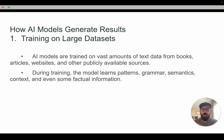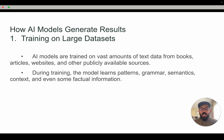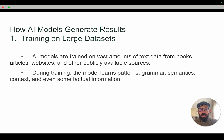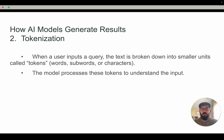So first, training on large data sets. AI models are trained on tons of data from books, articles, websites, and other publicly available sources. We just feed it a bunch of data and then during training the model learns patterns, grammar, semantics, context, and even some factual information. So we give it a bunch of information and then it needs to start to understand it and break that down.